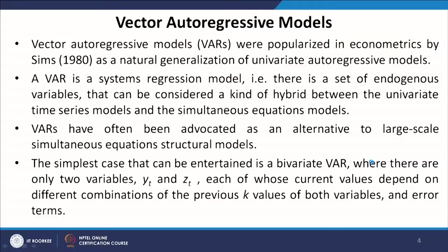Vector Autoregressive Models were popularized in Econometrics by Sims in 1980 as a natural generalization of univariate autoregressive models. We have so far studied univariate autoregressive models like AR1, AR2, ARP and also the MA (moving average) models. VAR is an extension of those univariate autoregressive models to multivariate structures.